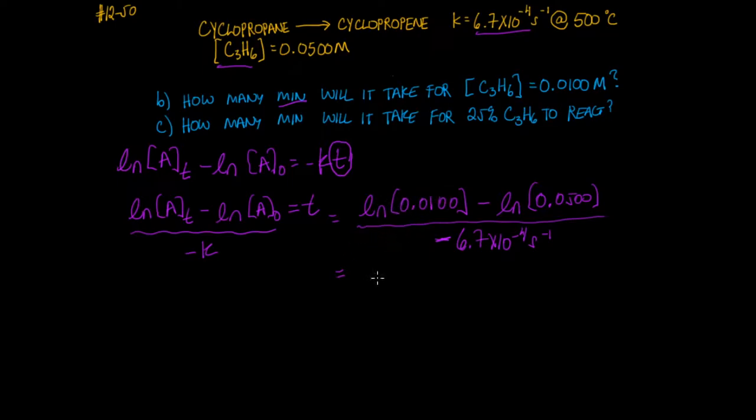So when you work this out on your calculator, the natural log of 0.01 is minus 4.605. Second term is 2.996 with a negative. And we divide this again by the rate constant. So I'm showing you stepwise here so you can see what happens to the signs here.